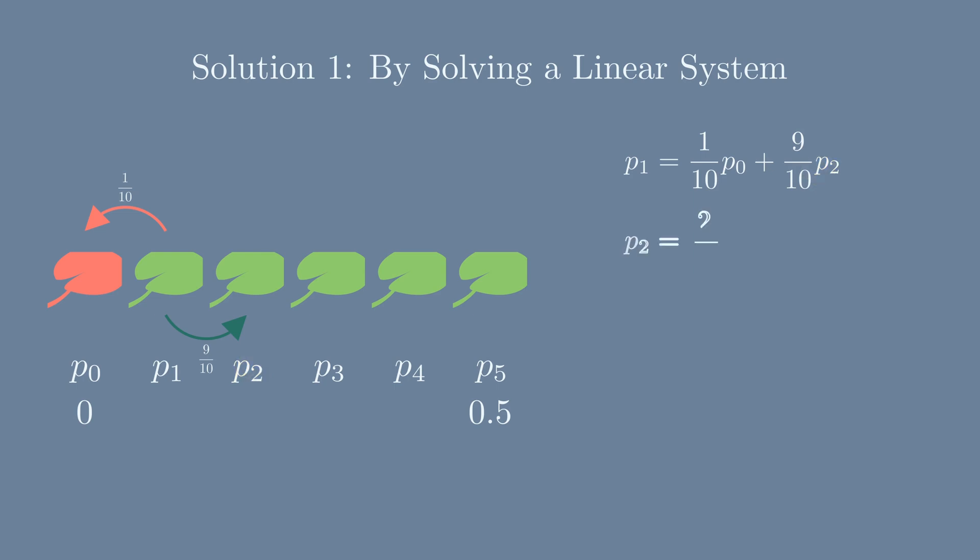The same idea applies to all other lily pads and we will obtain a system of linear equations. Substitute the values for p0 and p5, which are 0 and 0.5, and solve it. We find p1 is 63 over 146.